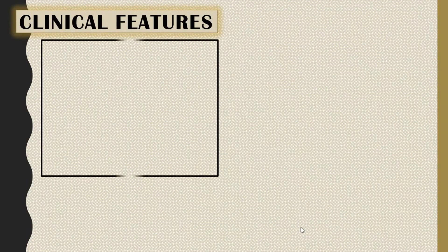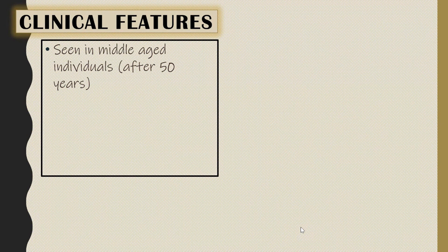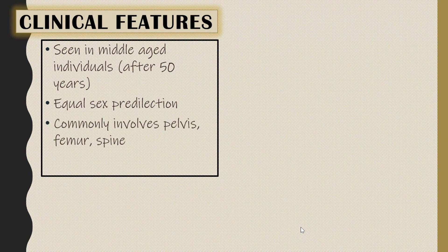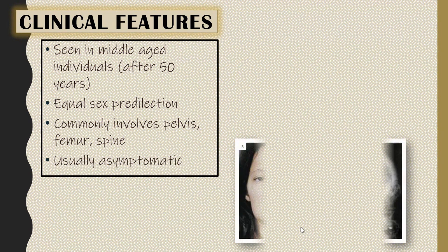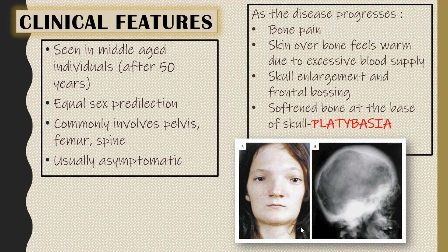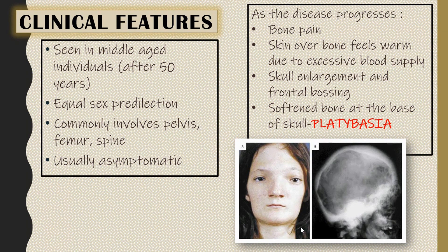It is usually seen in middle-aged individuals with equal sex predilection. It commonly involves the pelvis, femur, and spine. The disease is usually asymptomatic, but as it progresses there is bone pain, skull enlargement, and frontal bossing. The skin over the bone feels warm due to excessive blood supply, and there is softening of bone at the base of the skull called platybasia.